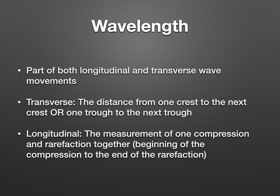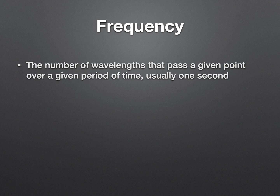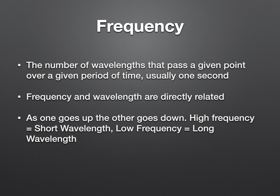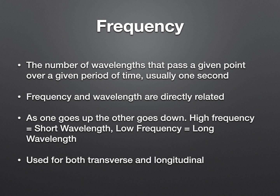A word we did not show in our models today but will use very often is frequency. Frequency is the number of wavelengths that pass a given point over a given period of time, typically one second, because waves travel very fast. Frequency and wavelength are inversely related: as one goes up, the other goes down. High frequency equals short wavelength — if it's happening often, the wavelengths aren't far apart. Low frequency means it's not happening very often, so it's a long wavelength. We'll talk more about that as we go, and this applies to both longitudinal and transverse waves.